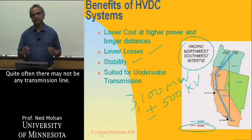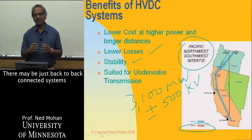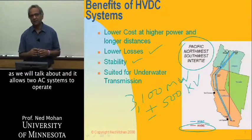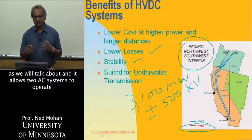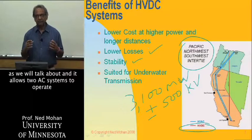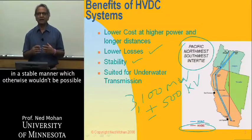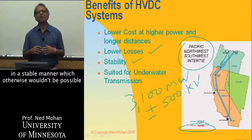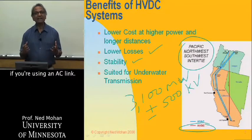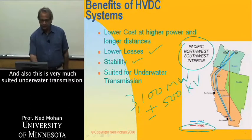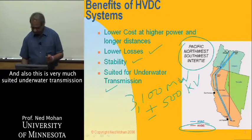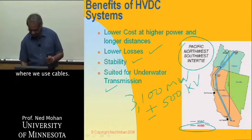Quite often there may not be any transmission line — they may be just back-to-back connected systems, as we will talk about. This allows two AC systems to operate in a stable manner, which otherwise wouldn't be possible if you're using an AC link. Also, HVDC is very much suited for underwater transmission where we use cables.